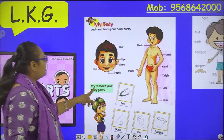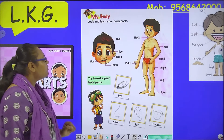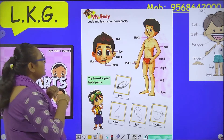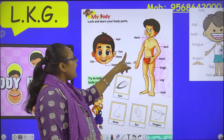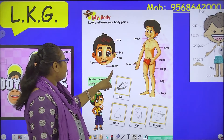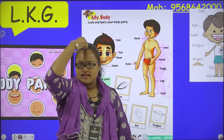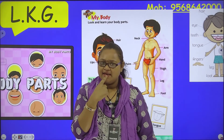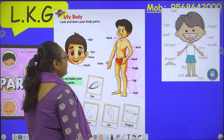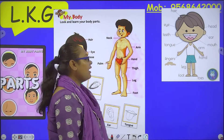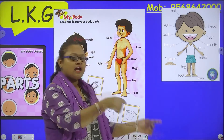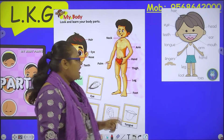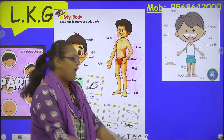Now, what do you have to do? Look at your book. In the book, what body parts are there? First comes the face. So, what body parts are on the face? Eye, nose, teeth and lips. Here's eye, nose, teeth and lips. Then comes the rest of the body parts: neck, arm, hand, thigh, leg, foot and palm.